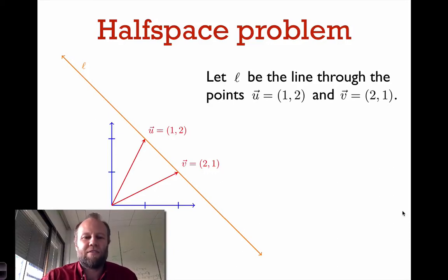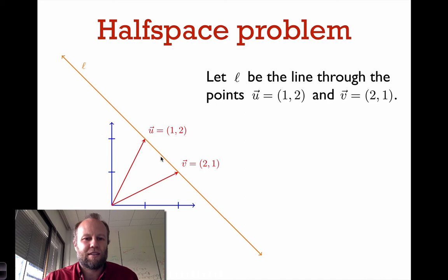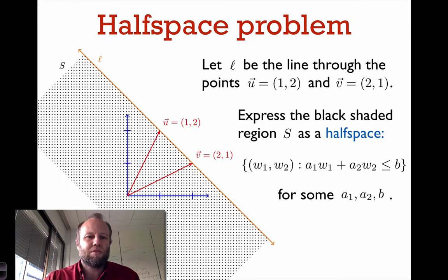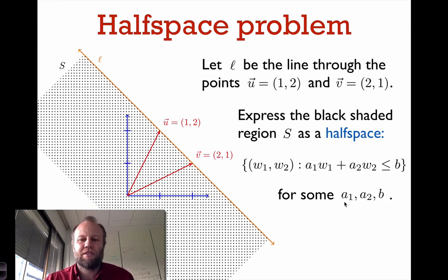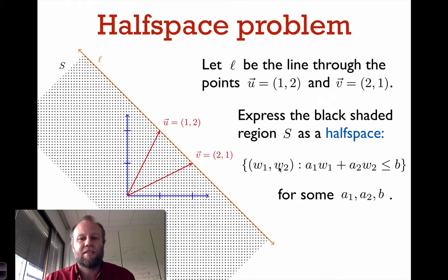In this video I want to go over question number 5 on problem set 2. The setup for this problem was the following: we have a line L going through the points (1,2) and (2,1). We want to describe the region to the southwest of this line as a half space. That means we want to find some real numbers a1, a2, and b so that we can describe this region S as the set of vectors with components w1, w2 satisfying the inequality a1 times w1 plus a2 times w2 is less than or equal to b.